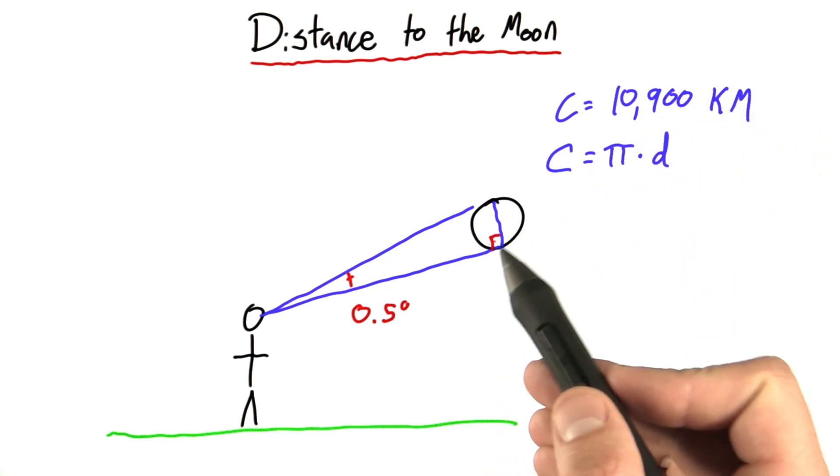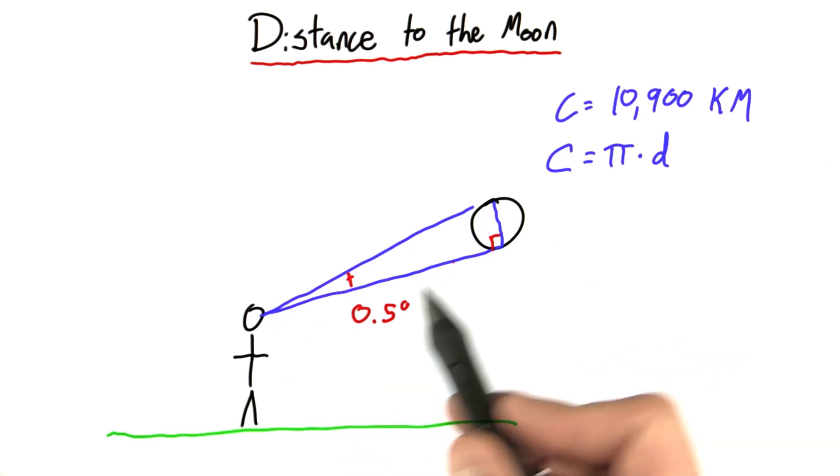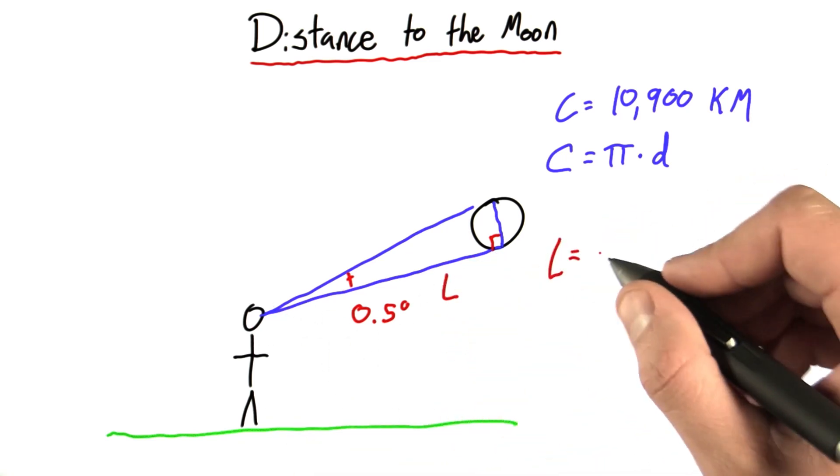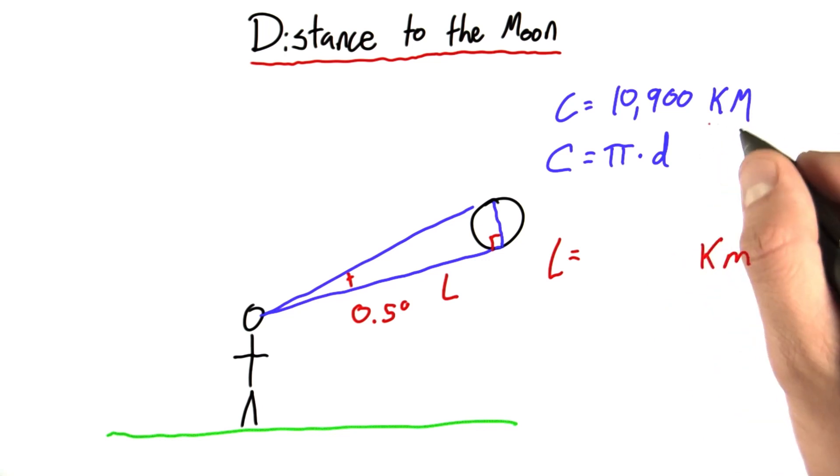So when you're doing this problem, pretend this is a 90 degree angle, and let's calculate this distance to the moon. We'll call it L. So I want you to tell me L in kilometers based on this data.